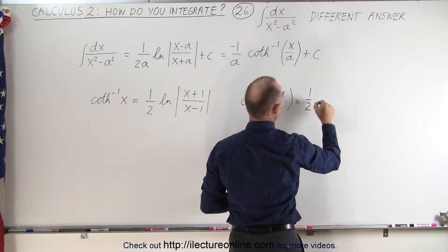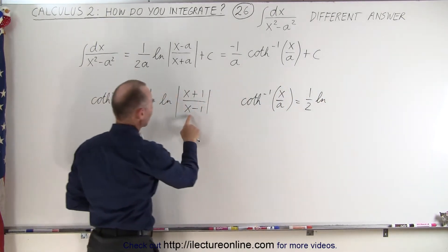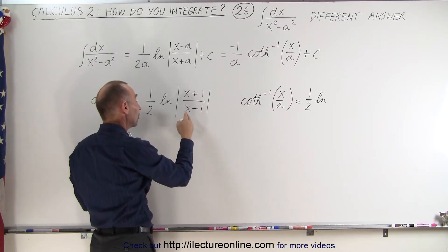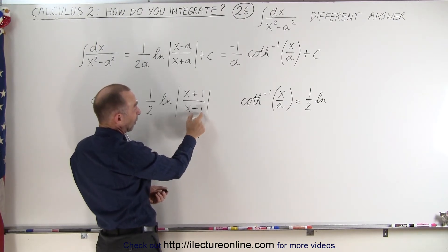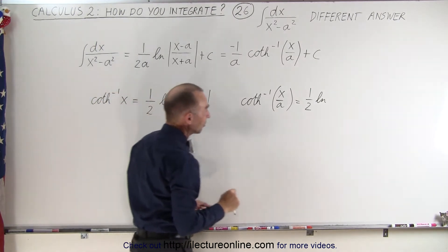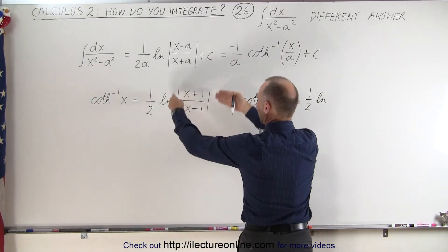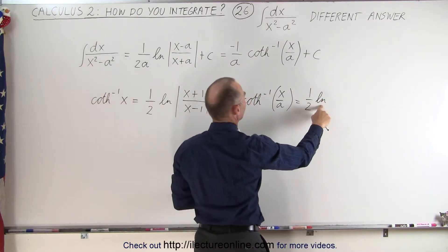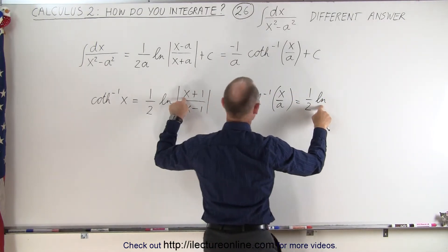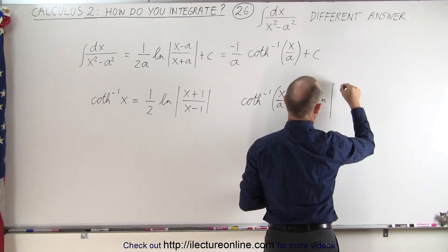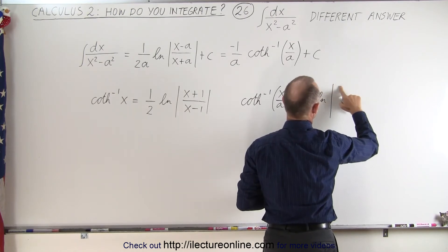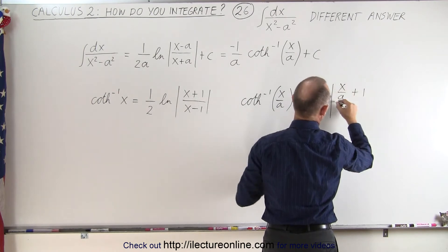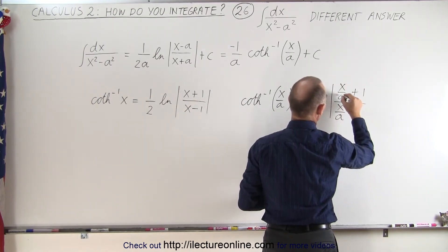So the inverse hyperbolic cotangent of x over a. We're going to replace every x by x over a and see what we get. So one half times the natural log. And of course, we have to remember here that the square root of x should always be less than one because we don't really want a negative answer in here. That's why we put the absolute value signs around them. So here we have one half times the natural log of x over a plus one divided by x over a minus one.